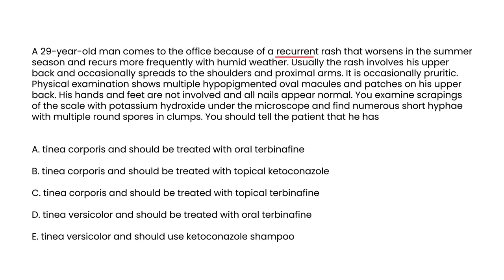Next question: a 29-year-old man comes to the office because of a recurrent rash that worsens in the summer season and recurs more frequently with humid weather. Usually the rash involves his upper back and occasionally spreads to the shoulders and proximal arms. It is occasionally pruritic. Physical exam shows multiple hypopigmented oval macules and patches on his upper back. Hands and feet are not involved, and all nails appear normal. Examination of scrapings with potassium hydroxide under the microscope finds numerous short hyphae with multiple round spores in clumps. What is the diagnosis?